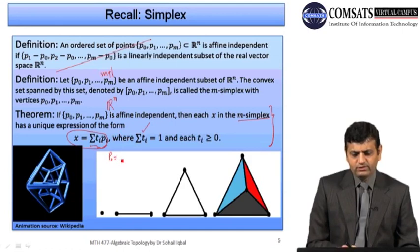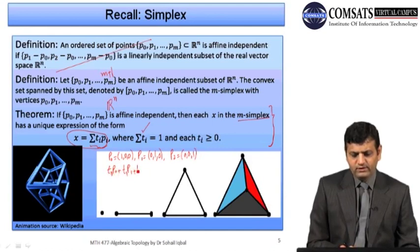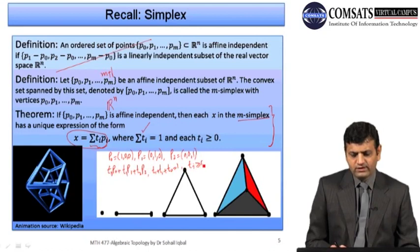For example, take p_0 = (1,0,0), p_1 = (0,1,0), and p_2 = (0,0,1) in ℝ^3. The two-simplex generated by these three points is the combination t_0·p_0 + t_1·p_1 + t_2·p_2, where t_0 + t_1 + t_2 = 1 and all t_i ≥ 0. This turns out to be the solid triangle with vertices p_0, p_1, p_2.